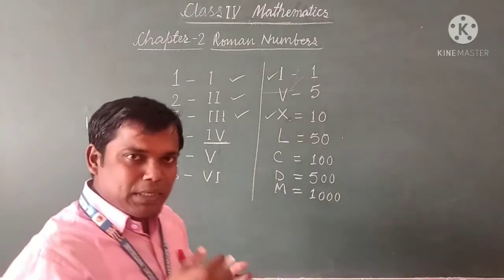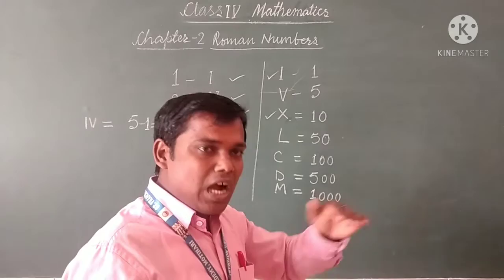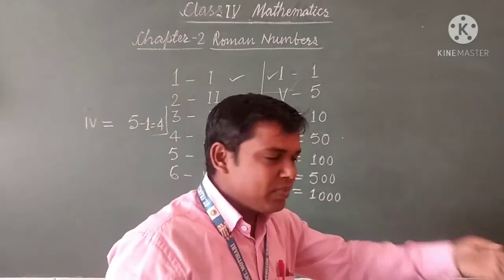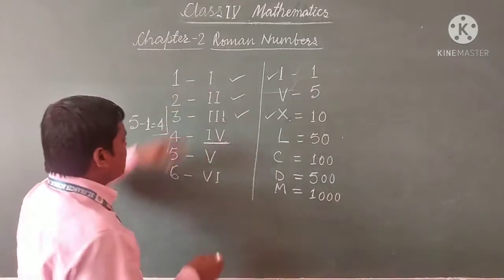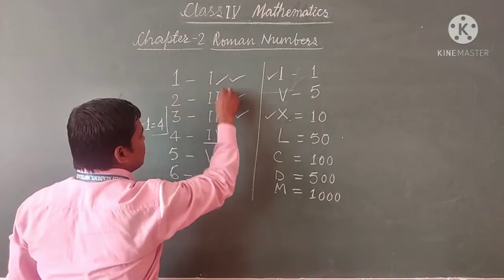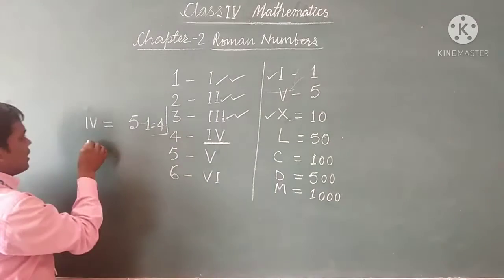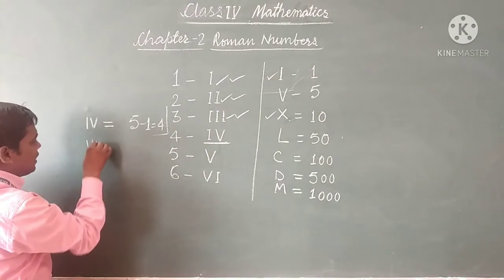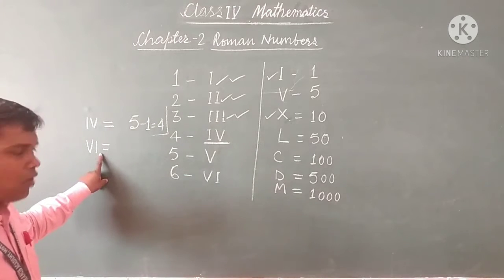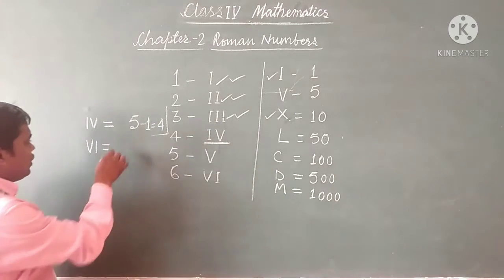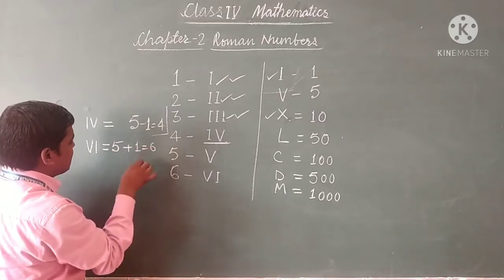And if we are writing a smaller symbol after a bigger symbol, that time we will add. For example, VI — here I is written after V, so we add: 5 plus 1. I is for 1 and V is for 5. So we write 5 plus 1, which is 6.